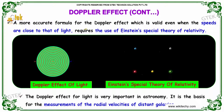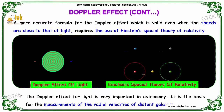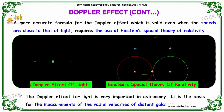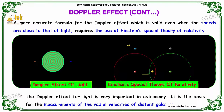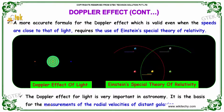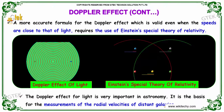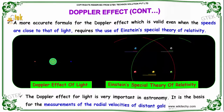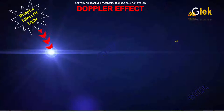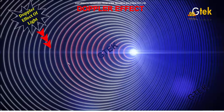A more accurate formula for the Doppler effect, which is valid even when the speed is close to that of light, requires the use of Einstein's special theory of relativity. The Doppler effect for light is very important in astronomy. It is the basis for the measurements of the radial velocities of distant galaxies. You are able to see the blue at the extreme and red here.